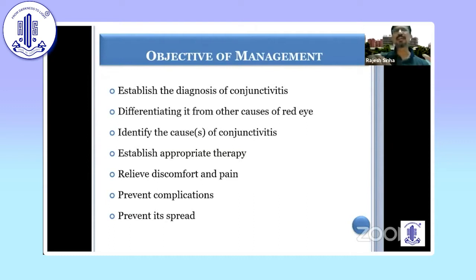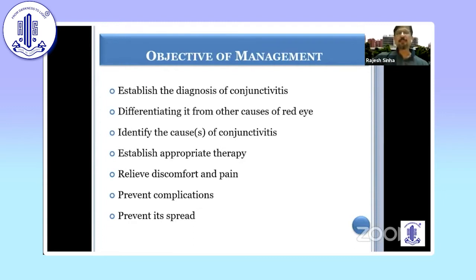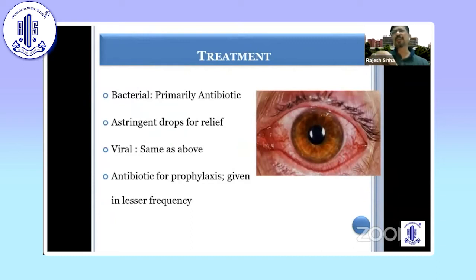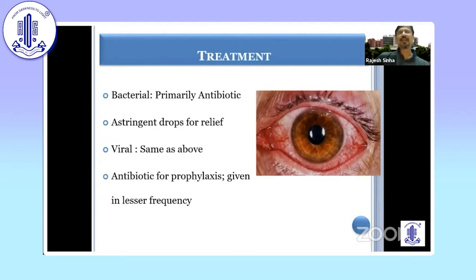The objective of management is to understand what type of conjunctivitis this is, differentiate other causes, and do appropriate therapy. The aim is also to relieve discomfort and pain — even if it is viral and self-limiting, you have to relieve the patient of discomfort, chemosis, and pain — and to prevent complications and spread to others. If bacterial, give antibacterials aggressively for therapeutic purpose. If viral, give antimicrobials only two to three times a day for prophylaxis. Astringent drops and lubricant drops are given to reduce chemosis and provide comfort.